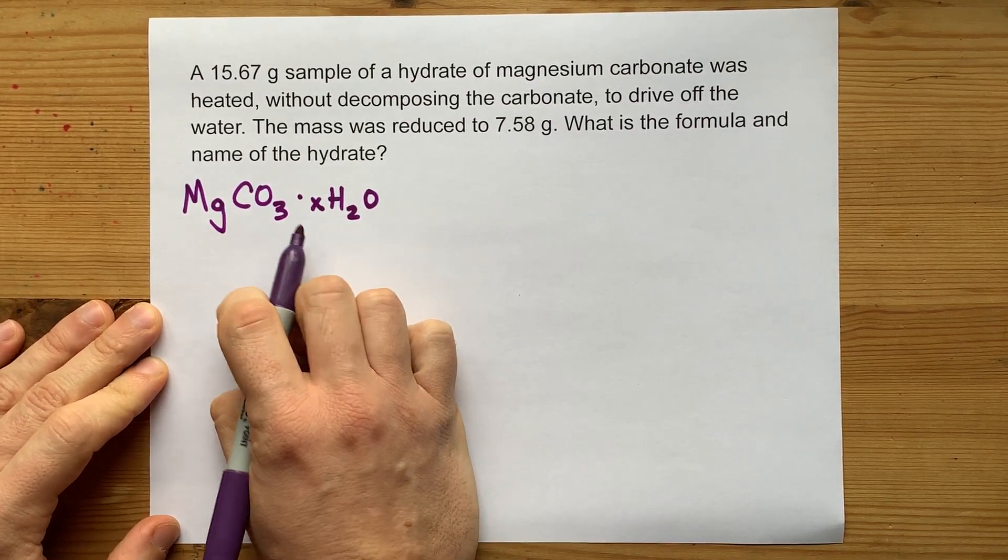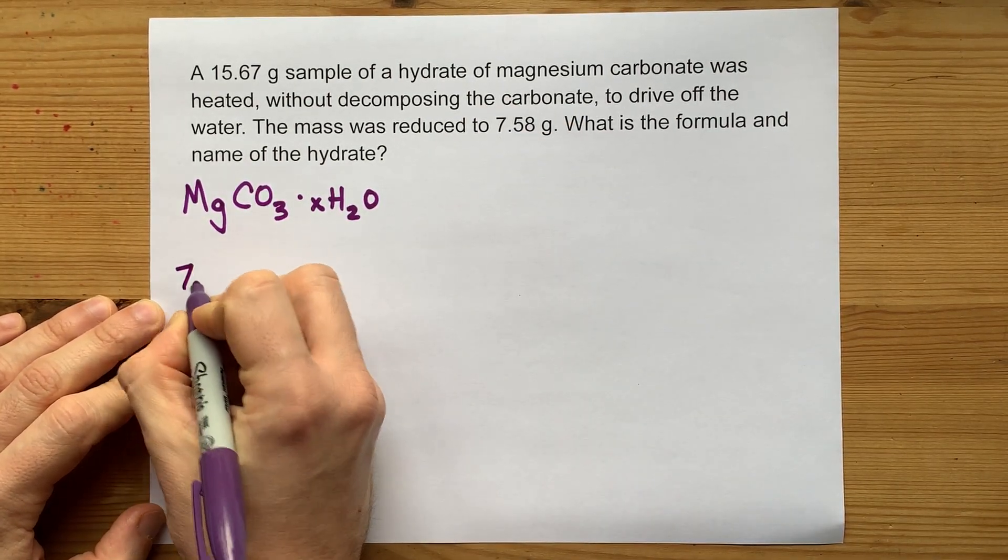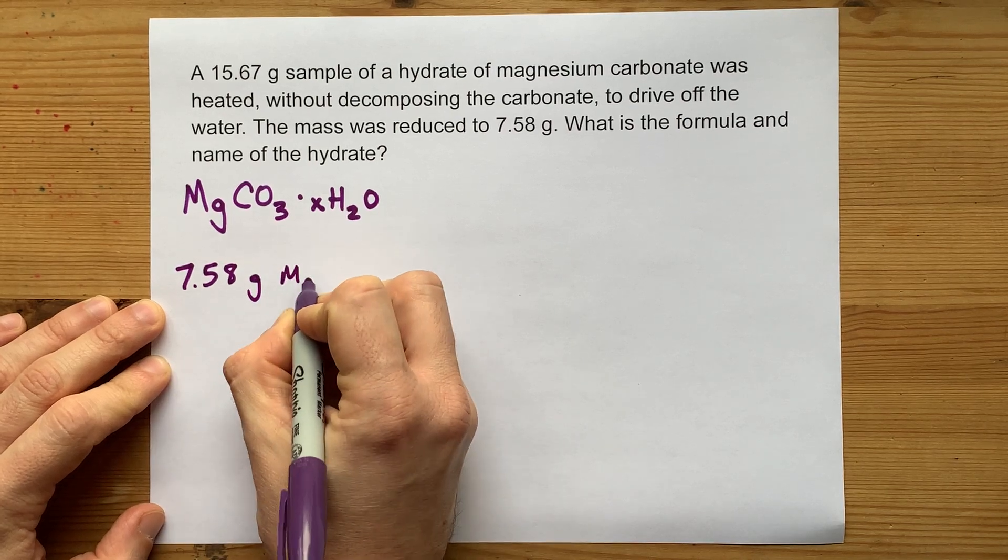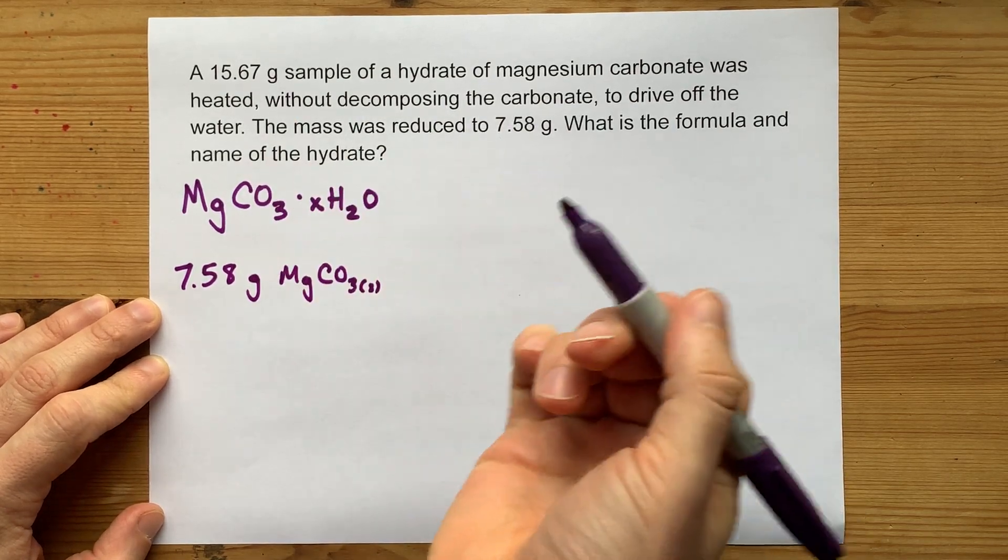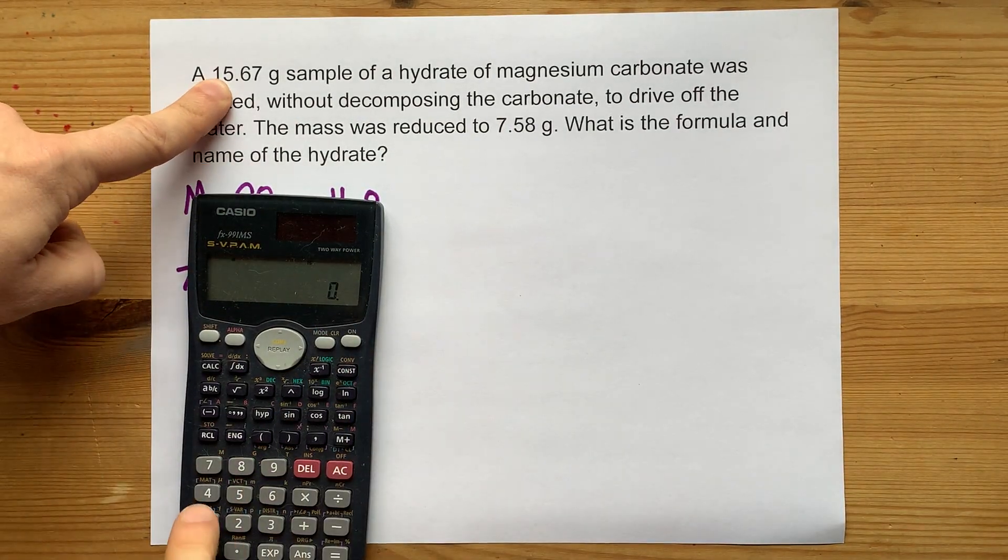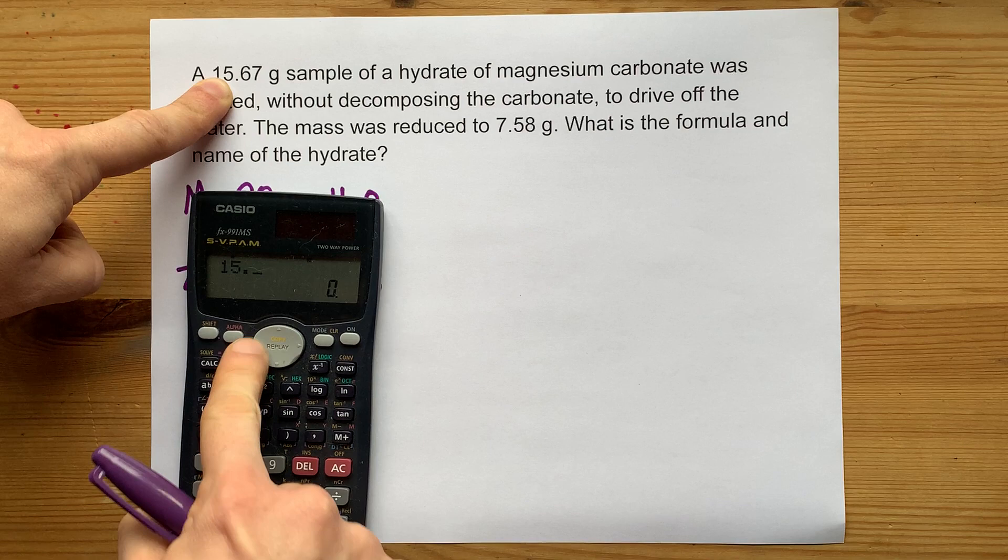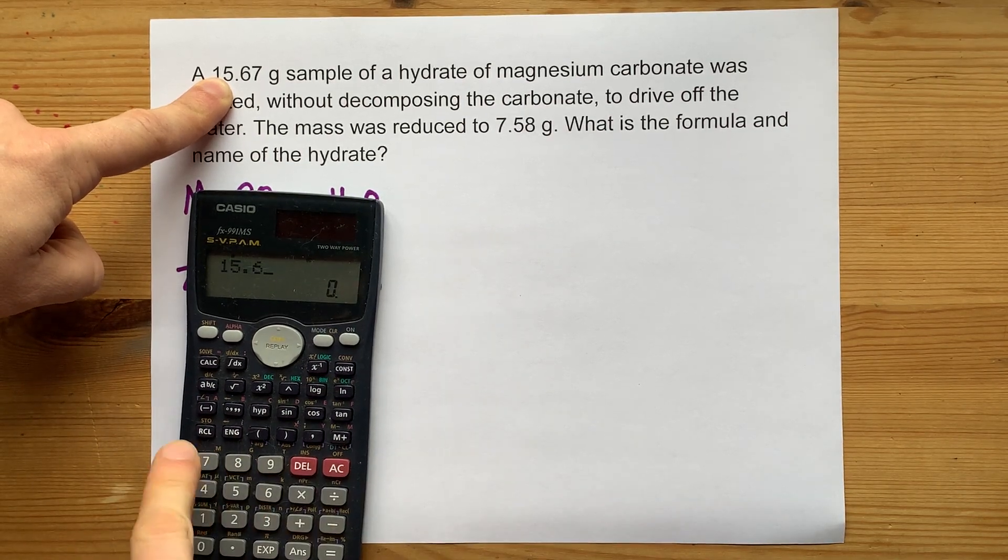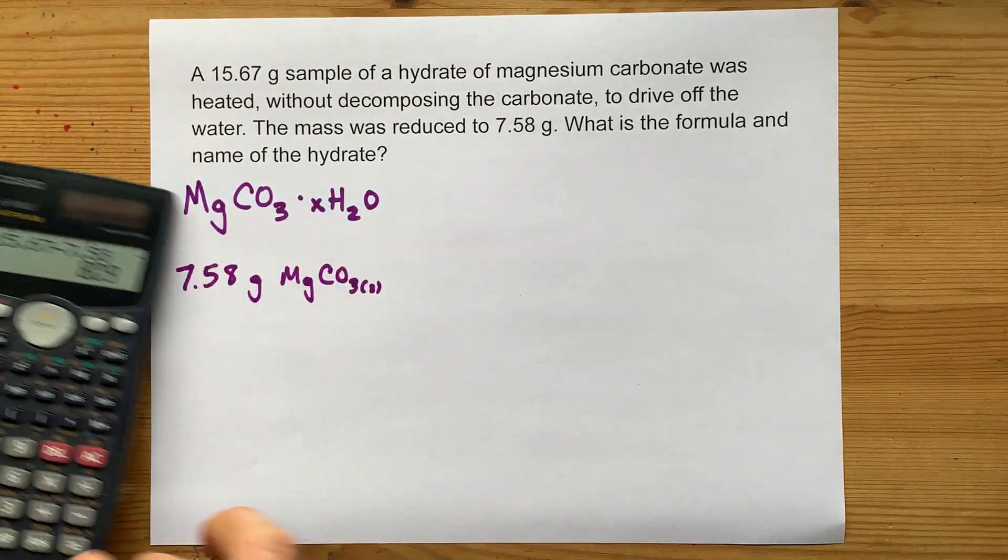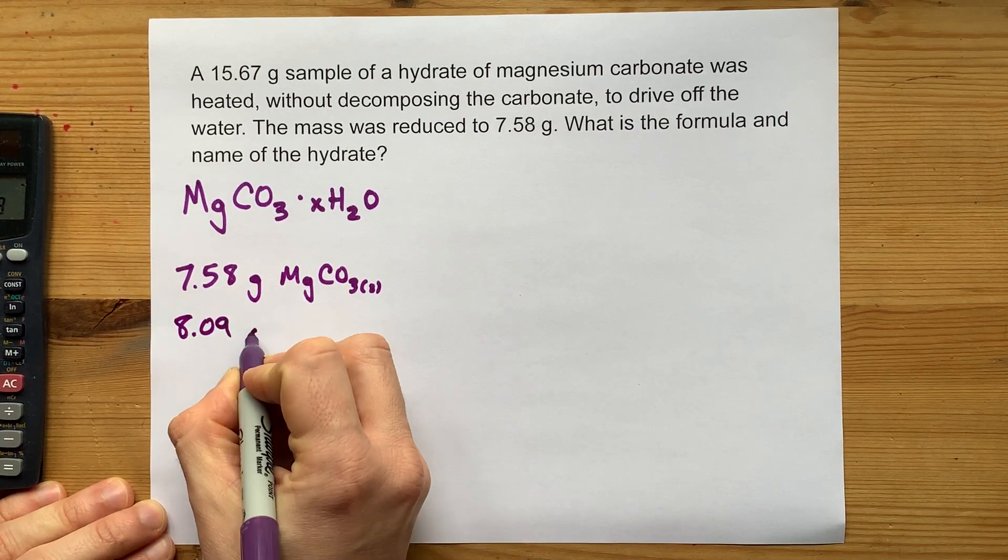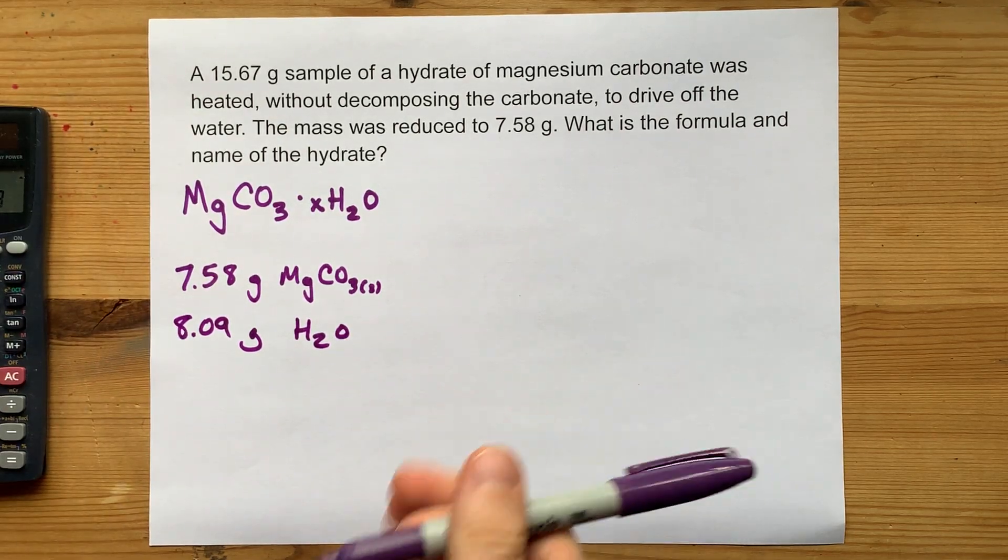We don't know what the coefficient on water is in this formula. But what we do know is that we have 7.58 grams of just the MgCO3, and we lost some water. How much water did we lose? 15.67 minus 7.58. We lost 8.09 grams of water. And together, those made the 15.67 gram sample.